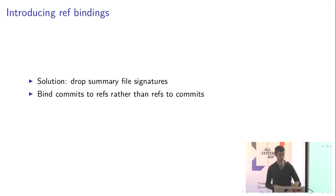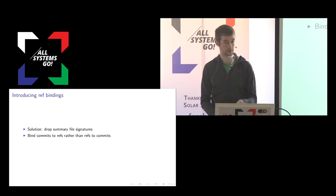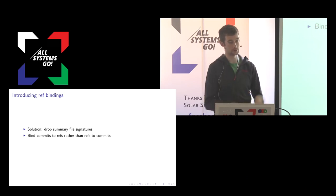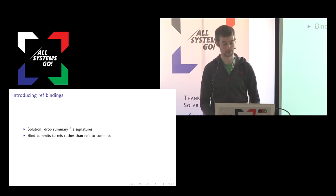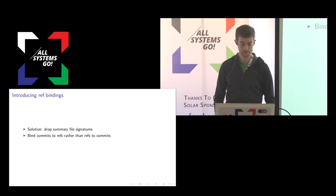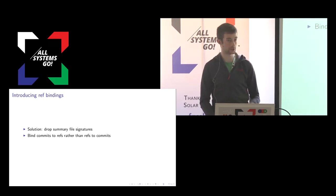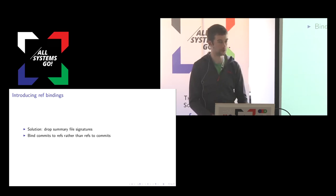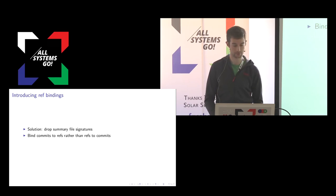Dropping signatures reduces security, so we reintroduce it by splitting the ref mapping and flipping how security is done. Instead of a summary file binding a ref name to a commit checksum, you have a ref binding inside the commit itself — binding the ref name to that commit. It is kind of backwards rather than forwards.